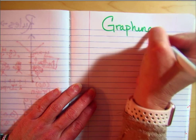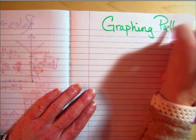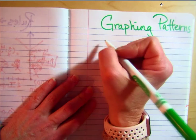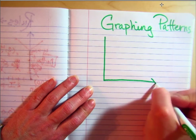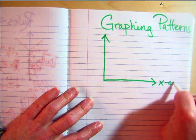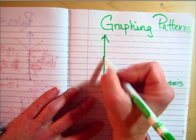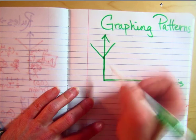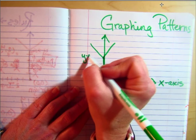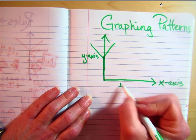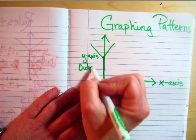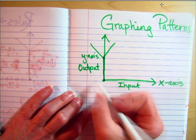When we're graphing patterns, there are some key things you need to remember. This is always our x-axis, this is always our y. Remember we can make a big Y out of this vertical line here — this is our y-axis. This is always going to be your input, and this is always going to be your output. I'm going to go over this every day because this is really important.